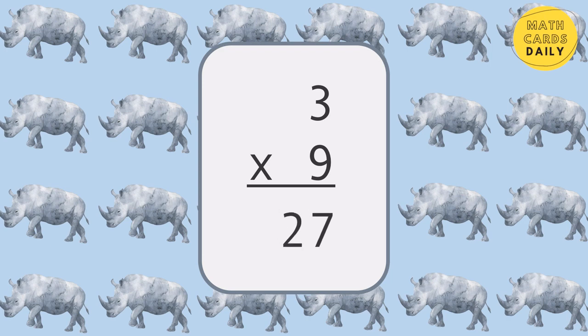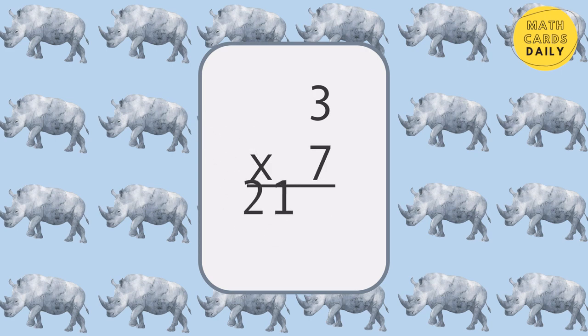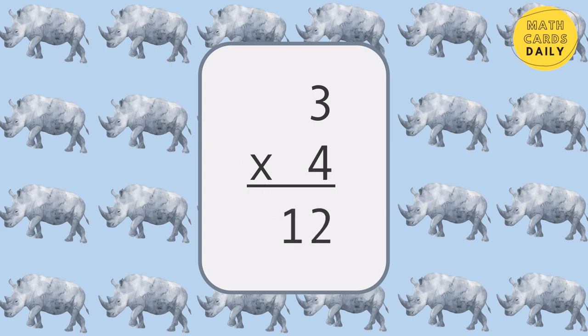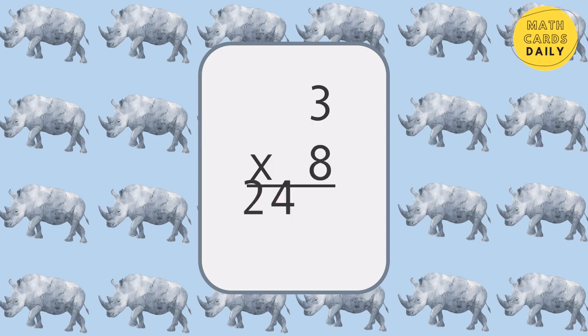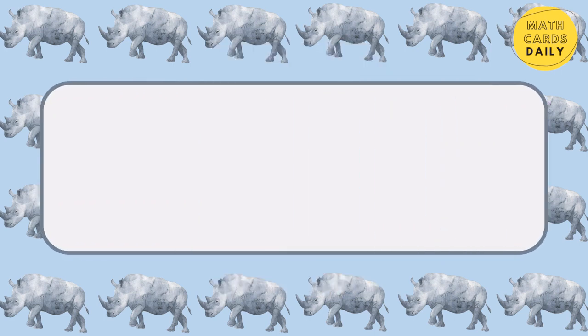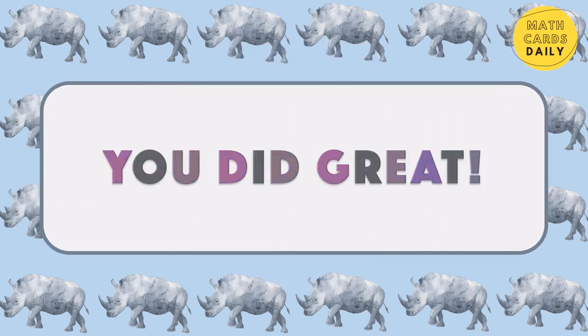3 times 9 equals 27. 3 times 3 equals 9. 3 times 7 is equal to 21. 3 times 4 is equal to 12. 3 times 8 is equal to 24. You did great.